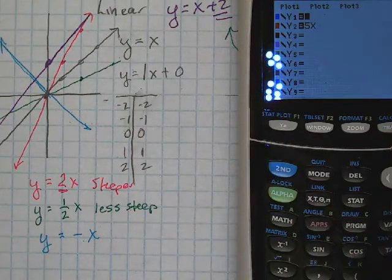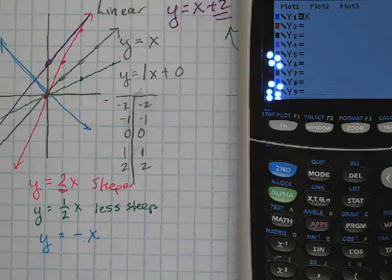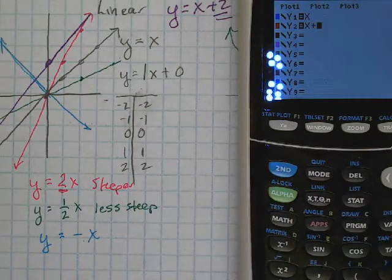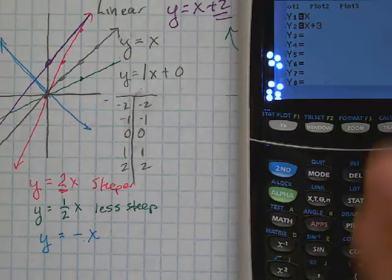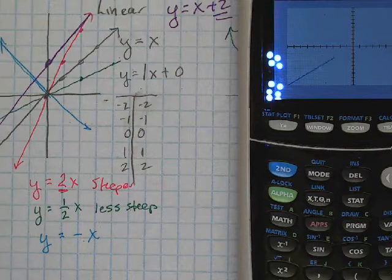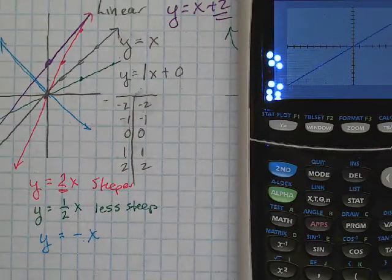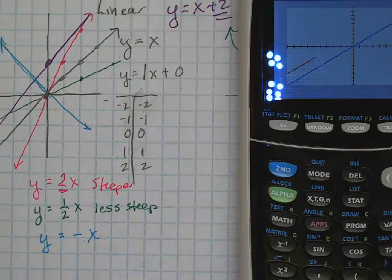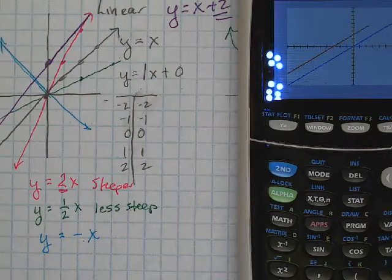If I go back to Y equals and take out that second one, if I type in X plus 3, what should happen is that graph should move up 3 units. So there's Y equals X, and Y equals X plus 3 is going to be the one that shifted up 3 units.